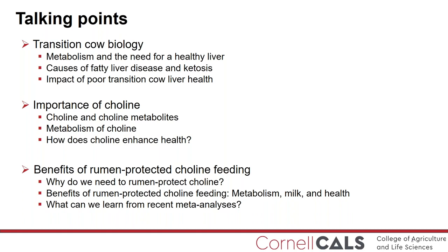Second, we will review the origins of choline research — what choline is, how choline is metabolized, and what functions choline elicits. We will focus our attention on liver triglyceride secretion in the transition cow. Third, we will review the need for rumen-protected choline by describing rumen choline degradation and the effects that choline feeding has on milk production, liver metabolism, and postpartum metabolic disease. We will also cover key take-home messages from recent meta-analyses pertaining to choline feeding in dairy cows.